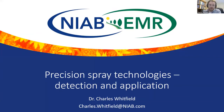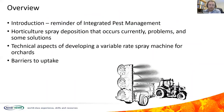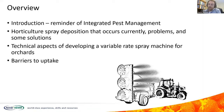Good morning everyone and thanks very much for the invitation to speak here. We've got quite a lot to get through in a relatively short time so I'm going to crack straight on. This is the overview of what I want to talk about today: first a quick look back at the definition of integrated pest management, then some results of work investigating spray application on commercial horticultural farms, then some technical aspects of developing a variable rate spray machine for apple orchards, and finally some of the barriers to the uptake of these approaches.